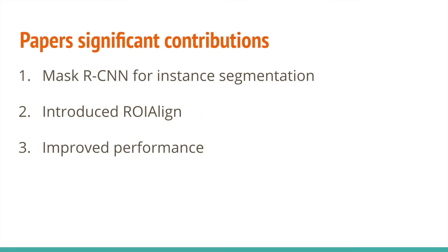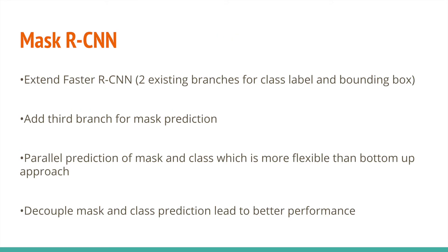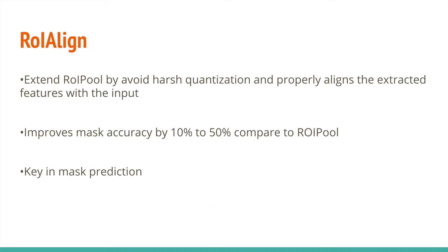There are three significant contributions. Mask RCNN for instance segmentation introduces ROI Align for better alignment of pooling to the image feature map. For the mask branch, Faster RCNN consists of two branches for class label and bounding box; Mask RCNN extends Faster RCNN by adding a third branch for mask prediction, where all branches predict simultaneously. ROI Pool used in Faster RCNN is not suitable for mask prediction due to hard quantization; extending to ROI Align improved accuracy by 10 to 50%.